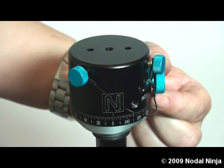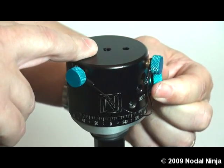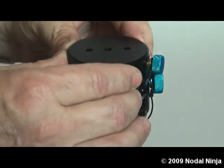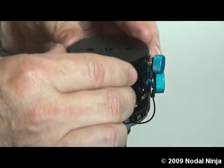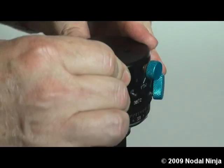The rotator lock knob does just that. By screwing it in, it prevents the rotator from turning. Loosening it allows you to rotate the rotator.